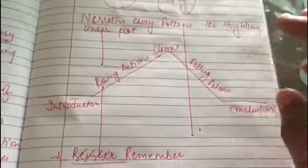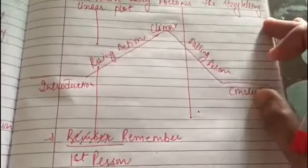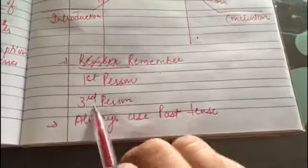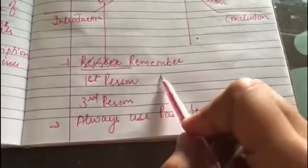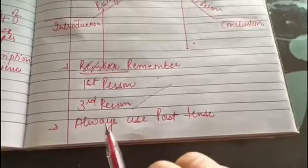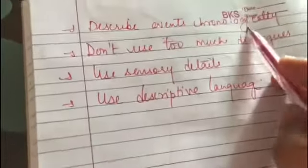Now there are a few things to remember. First person and third person: you can write it in first person or in third person. You will always use past tense and describe events chronologically.